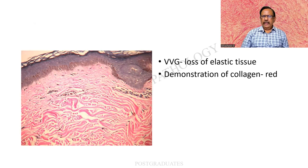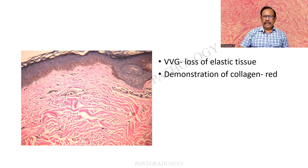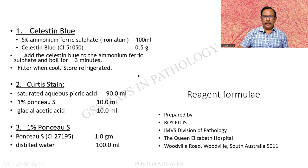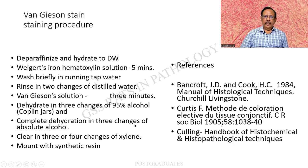A Verhoeff's Van Giesen stain is a close cousin of Van Giesen. In this particular case, the Verhoeff's Van Giesen stain is used to demonstrate elastic fibres. In this section of skin, there is hardly any elastic fibre — there is a marked loss of elastic tissue — and these are the collagen bundles, which are red in colour. These are the formulae for the Van Giesen stain. The important components to remember are celestine blue, Curtis stain, and picrofuchsin.